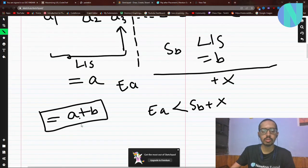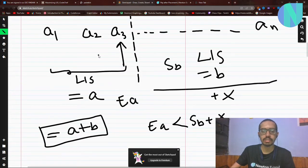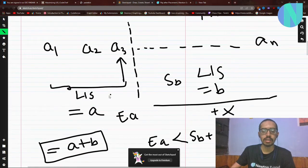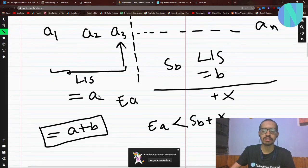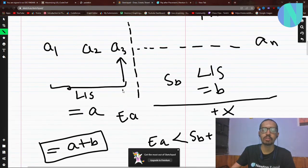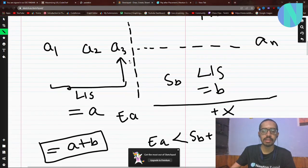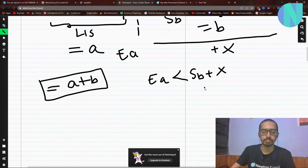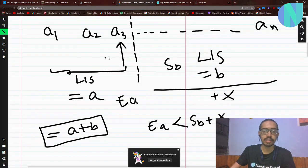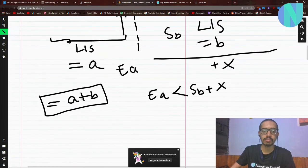Now I need to calculate this a and b for every index. LIS is a very standard problem - you can look it up online. We can find LIS of an array in n log n. I will compute LIS from the prefix and LIS from the suffix. Then I will iterate over the whole array and find the max of a plus b for every index. Whichever is maximum will be my answer.